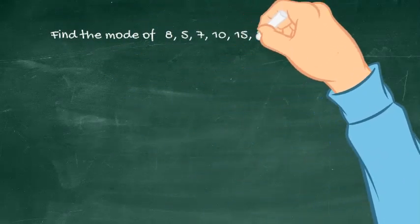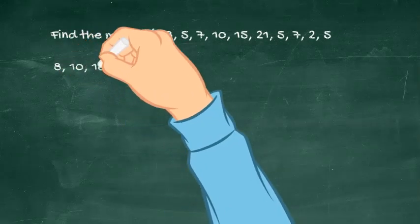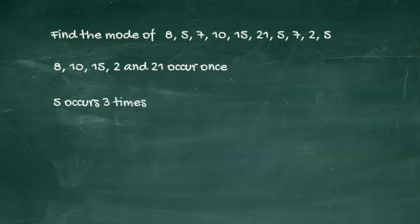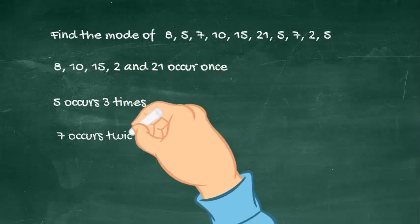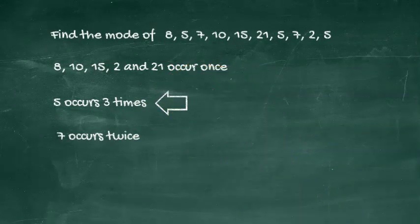Here is an example. Find the mode of 8, 5, 7, 10, 15, 21, 5, 7, 2, 5. The mode is the most occurring number. Here, 8, 10, 15, 2, and 21 occur once. 5 occurs 3 times, and 7 occurs twice. The most occurring number is 5, which occurs 3 times.